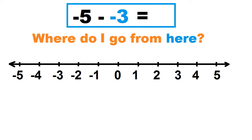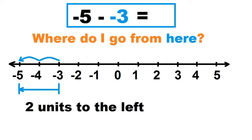How about negative 5 minus negative 3? Where do I go from negative 3? Count the number of units from negative 3 to negative 5, and take note of the direction. To the right is positive, to the left is negative. Let's count: 1, 2. That's 2 units to the left. So negative 5 minus negative 3 equals negative 2.